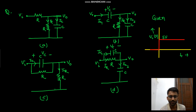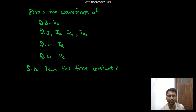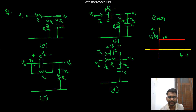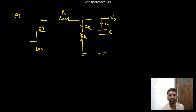Hello everyone. Now we will see this question — it's a very important question. You are given four configurations and for each we need to find the waveforms of v_out, i_c, i_c1, i_c2, and then determine the time constant. So these are the circuits. Let us see the first circuit now.